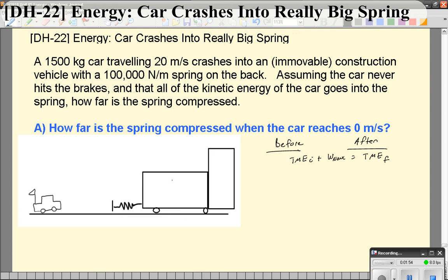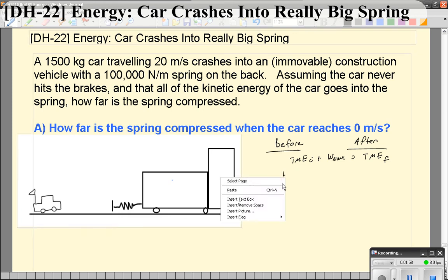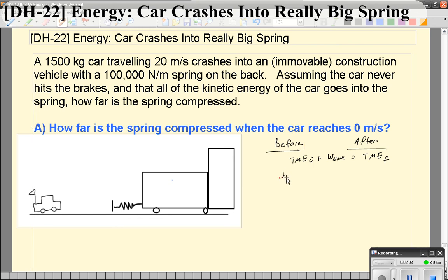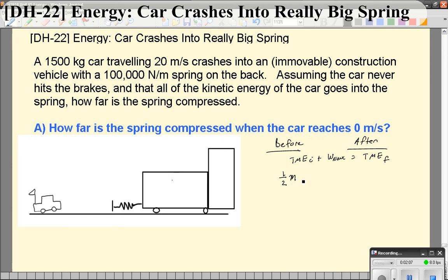So, in the beginning, we're really left with just the kinetic energy of the car, which is one half. I've got to get my pen back. One half, mass of the car, times the initial velocity squared.